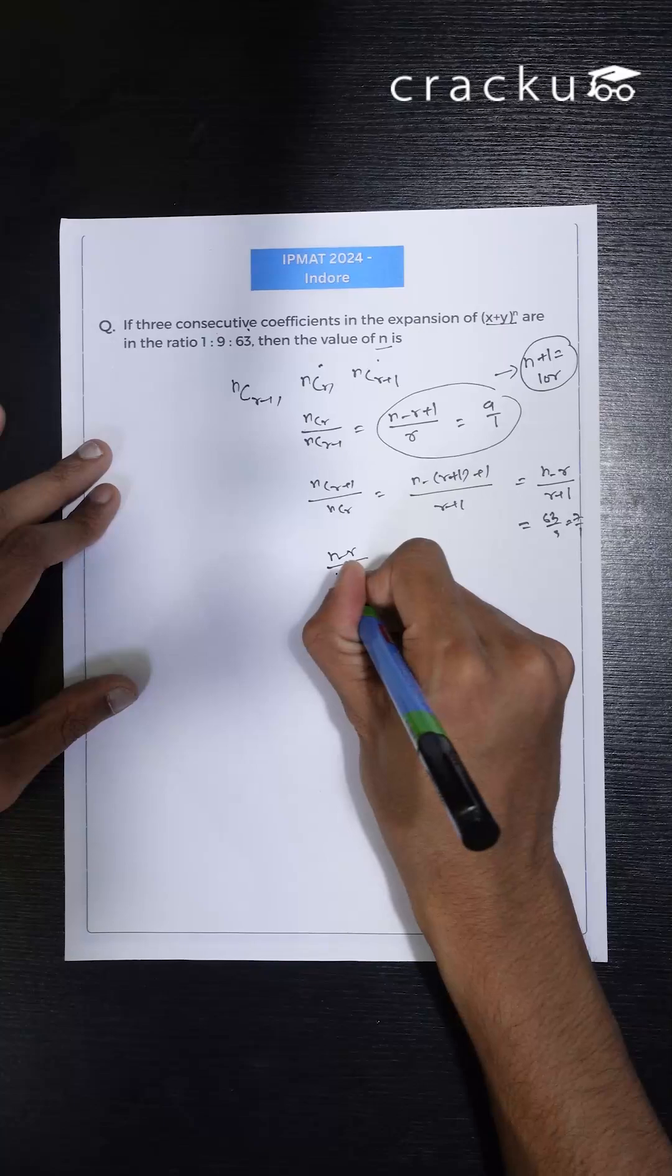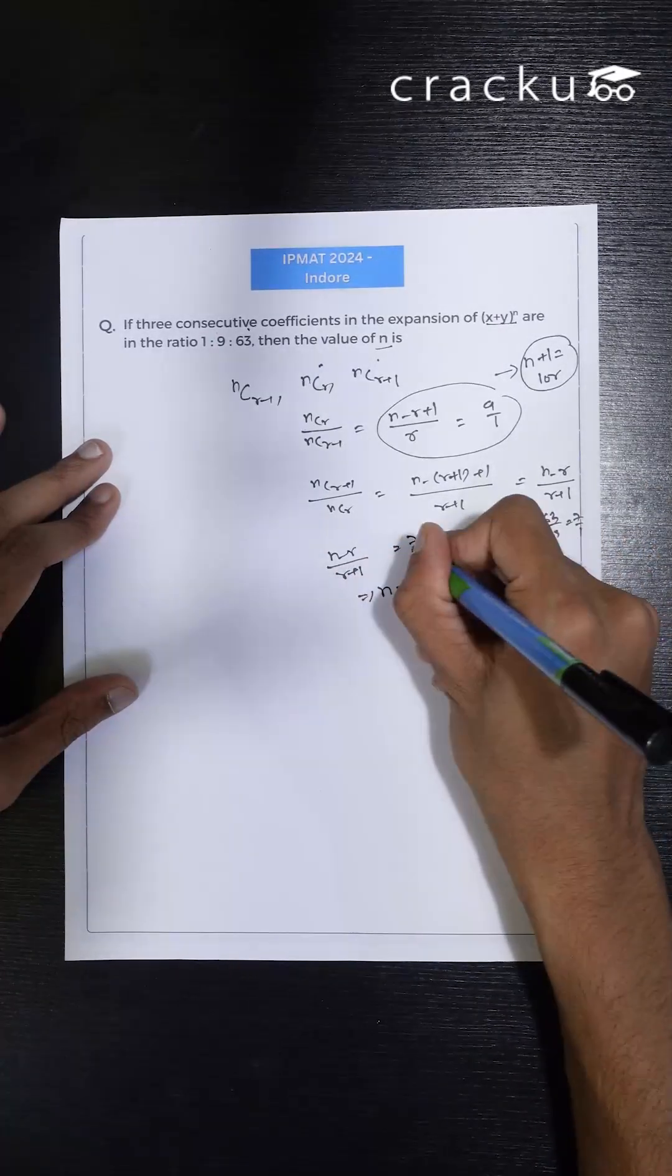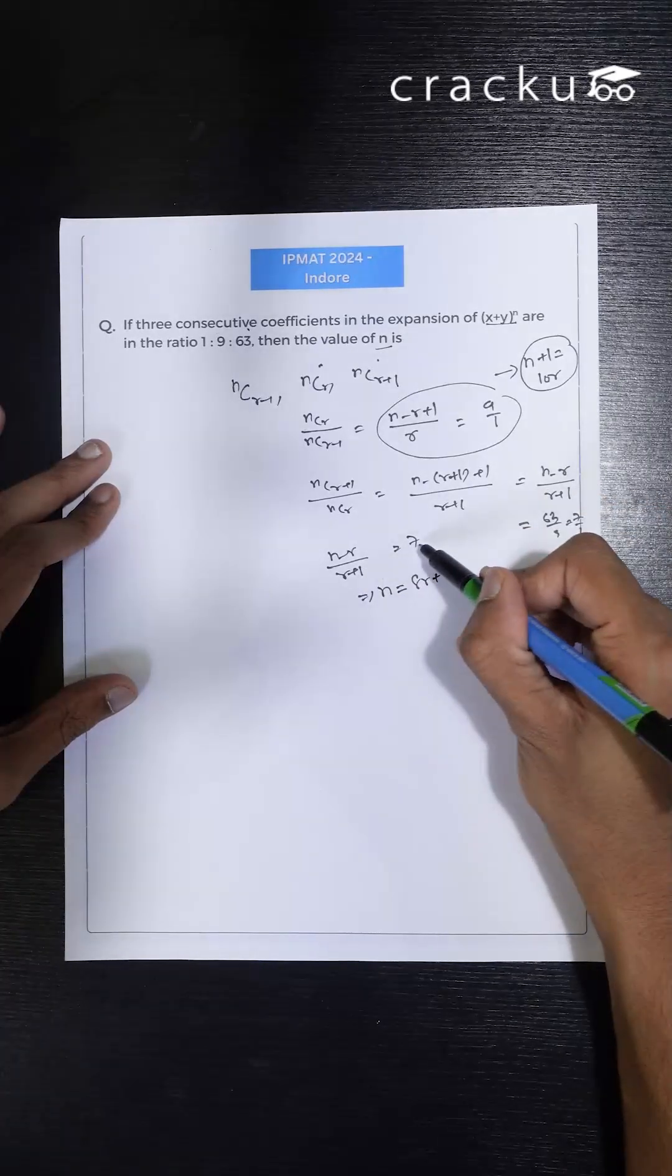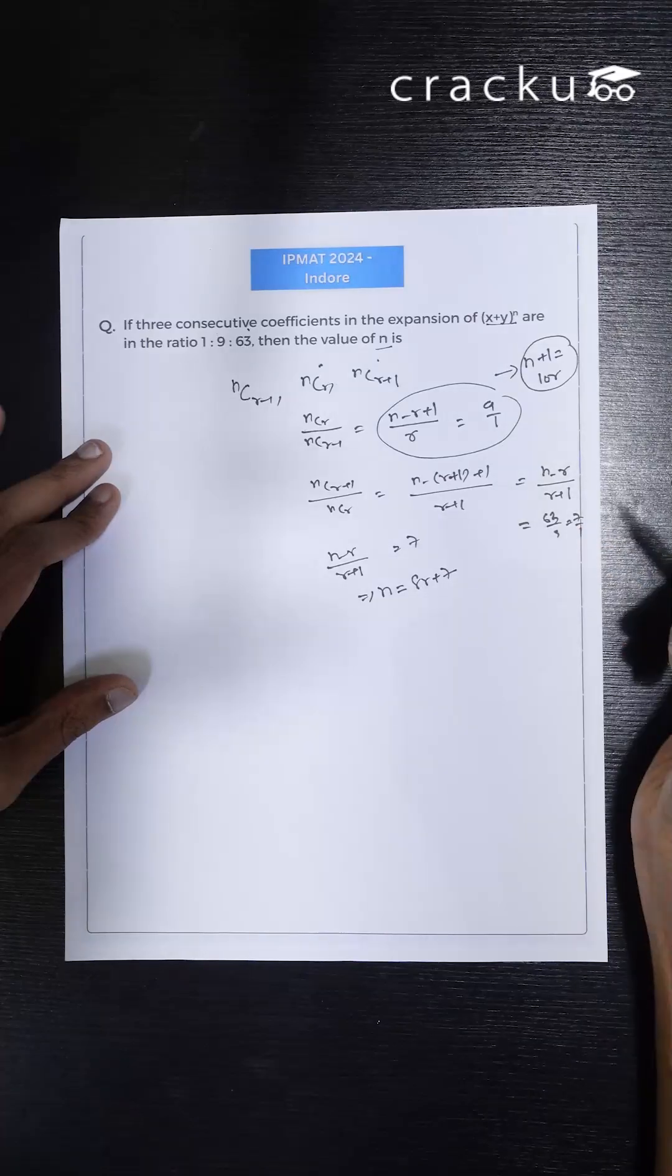Similarly from here, (n-r)/(r+1) = 7. From here I can write n = 8r+7 using the same logic. I can cross multiply, it would be 7r+7, I can bring this r here so it would be 8r+7.